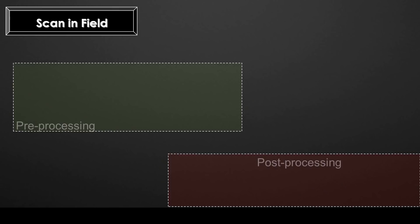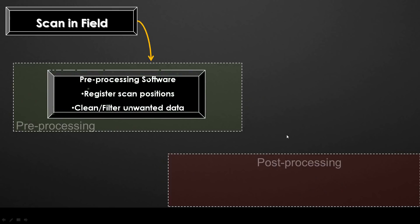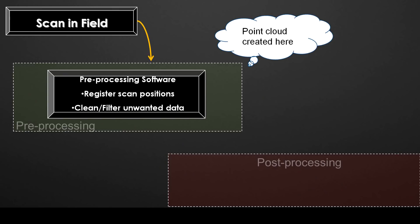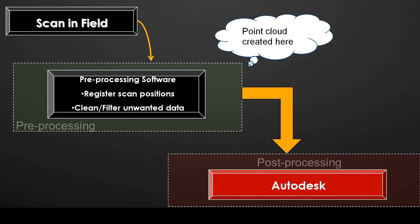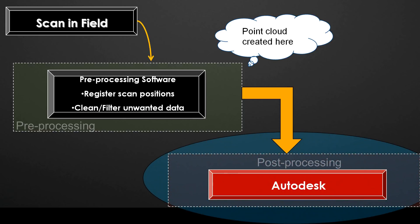The process pretty much remains the same. First, we start with our scan in the field, and that takes us into pre-processing with all of our raw, unregistered scans. This is where we clean up the data, register the scan positions, and get it ready for post-processing. This is where the registered point cloud is created, and then we can move to post-processing or design. In this case, we want to get the data into Autodesk software — this is going to be our focus today.